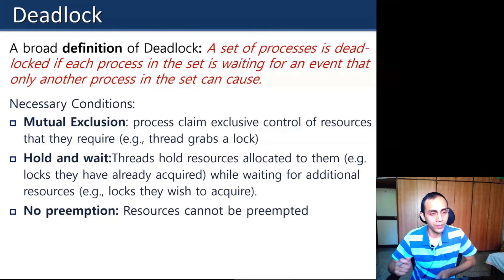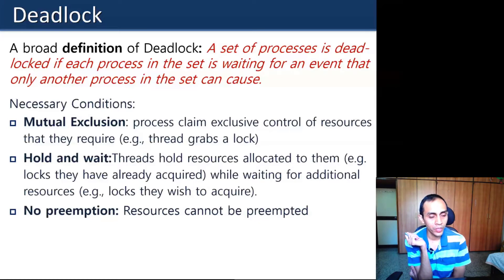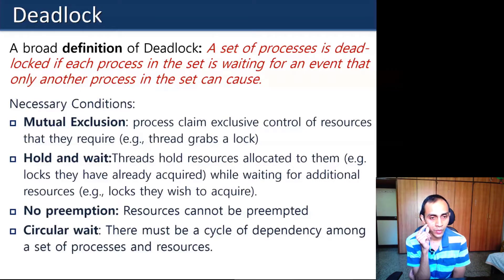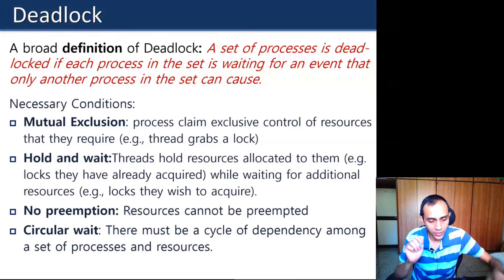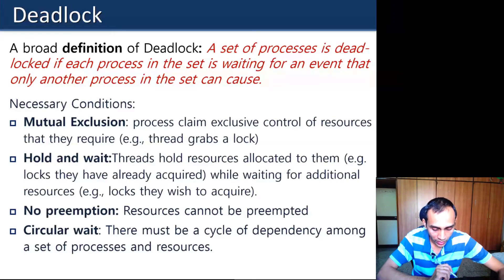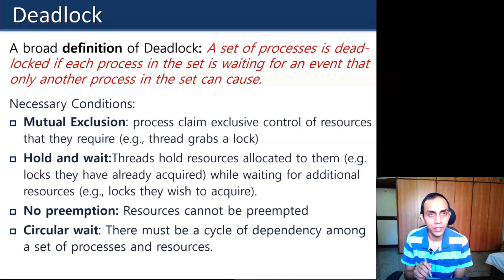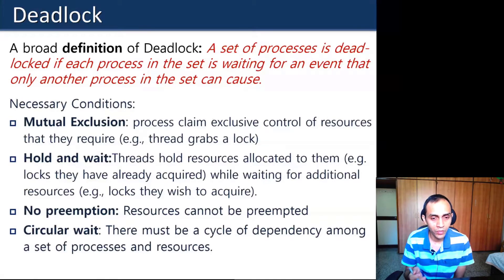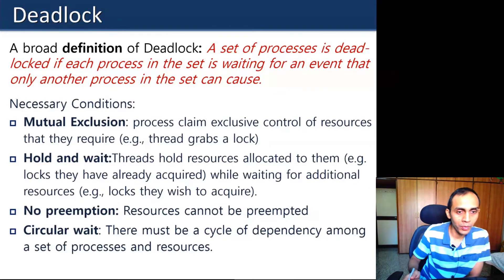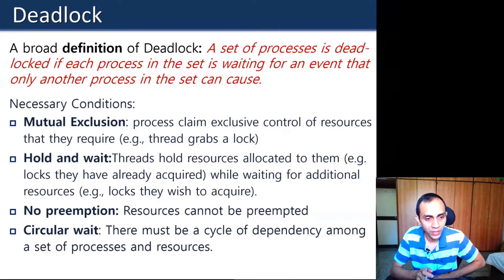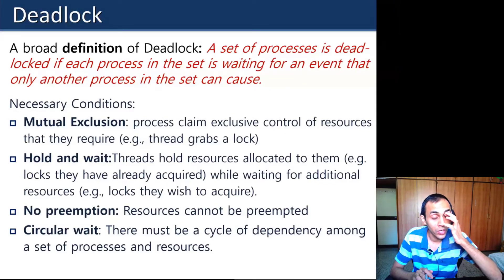Finally, there must be a circular wait among competing processes — some cycle must exist if you draw a resource allocation graph showing which resources are allocated to which processes and which are being requested. This is a deadlock condition. When there is only one instance of a resource, a cycle necessarily indicates a deadlock. If there are multiple instances — for example a counting semaphore — a cycle does not necessarily guarantee a deadlock.